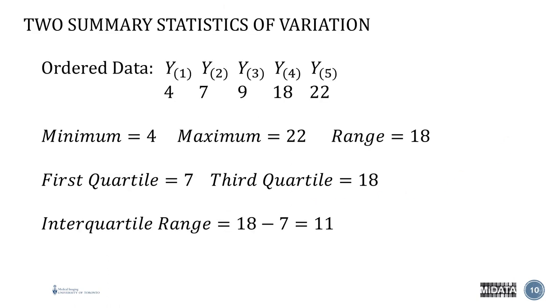Let's have a look at some summary statistics of variation. If we go back to our data set from the previous slide, and we keep it in ascending order, it is easy to identify the minimum, the maximum, the range, which is simply the difference between the minimum and the maximum, which is 22 minus 4, is 18.